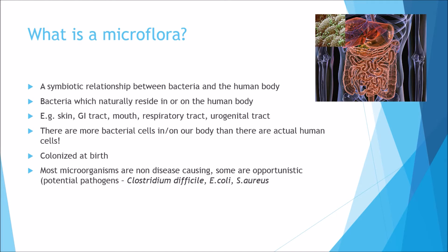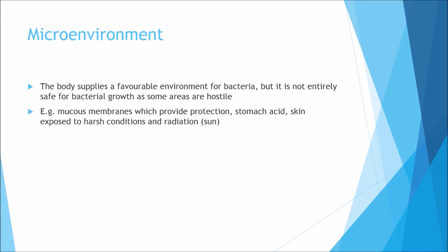But some are opportunistic, which means they can be potential pathogens. These include C. difficile, E. coli, and Staphylococcus aureus. These all grow where we have a selective macroenvironment. The body supplies a favourable environment for bacteria, but it is not entirely safe for bacterial growth as some areas are hostile.